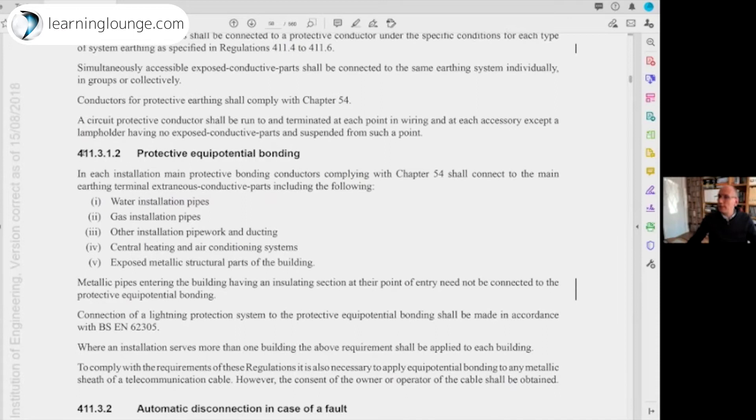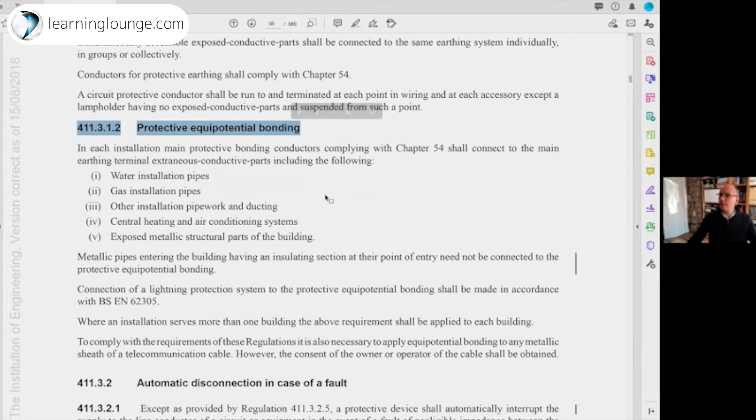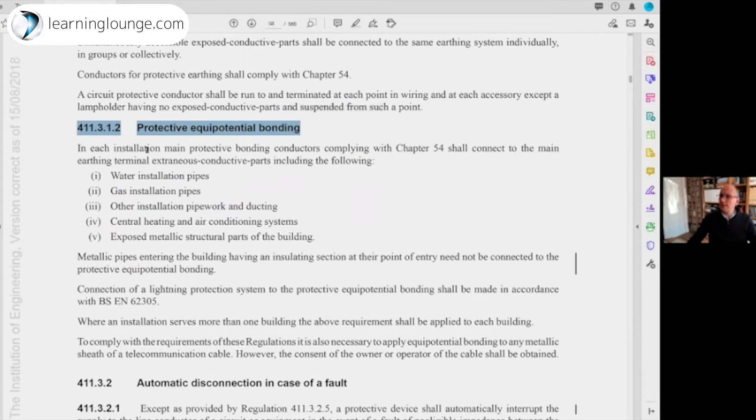Okay, there's two or three areas. Let me share my screen. Here I am at 411.3.1.2, protective equipotential bonding. As we can see, in each installation main protective bonding conductors complying with chapter 54 shall connect to the main earthing terminal extraneous conductive parts. It includes the following: water installation pipes, gas installation pipes, other installation pipework and ducting, central heating and air conditioning systems, and the exposed metallic structural parts of the building.